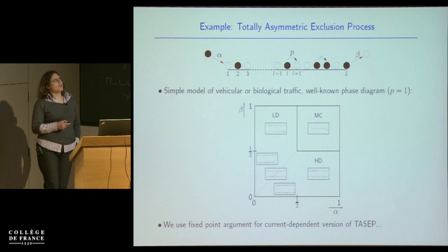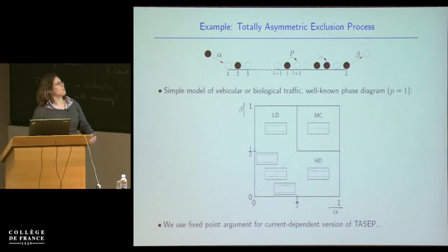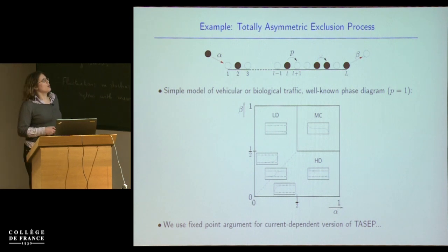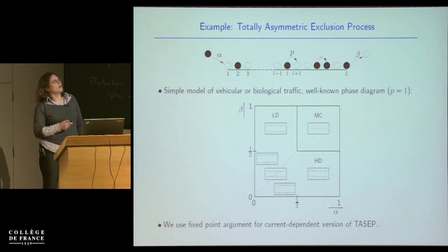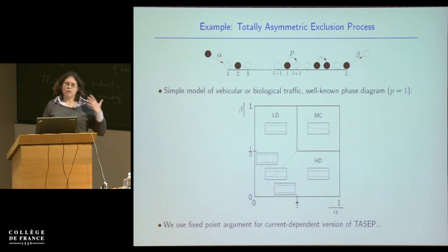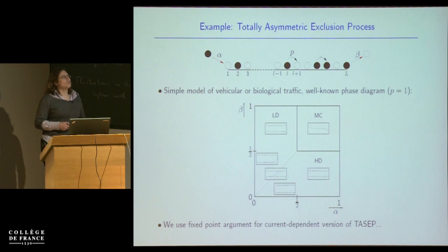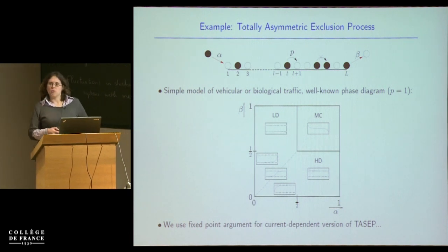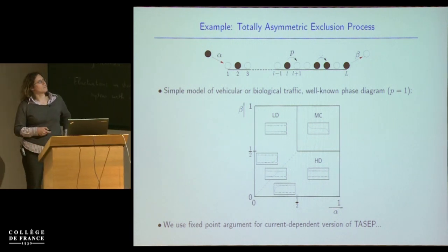At the boundaries we use open boundary conditions: particles enter with rate alpha if there's a space, and leave with rate beta if a particle is at the end. This simple memoriless model has been used as a cartoon model of various kinds of traffic — cars, ants, molecular motors. It's also interesting theoretically because it has phase transitions as a function of what you do at the boundaries. Setting the bulk hopping rate to one, we look at the phase diagram as a function of the input rate alpha and the output rate beta.